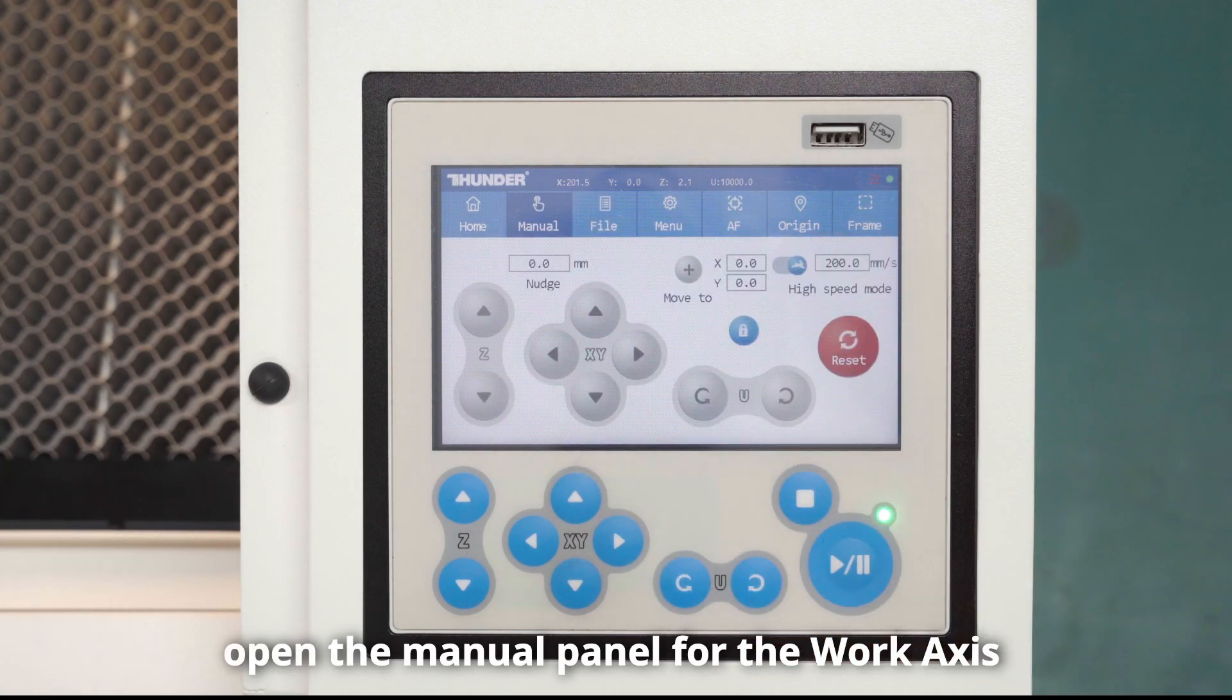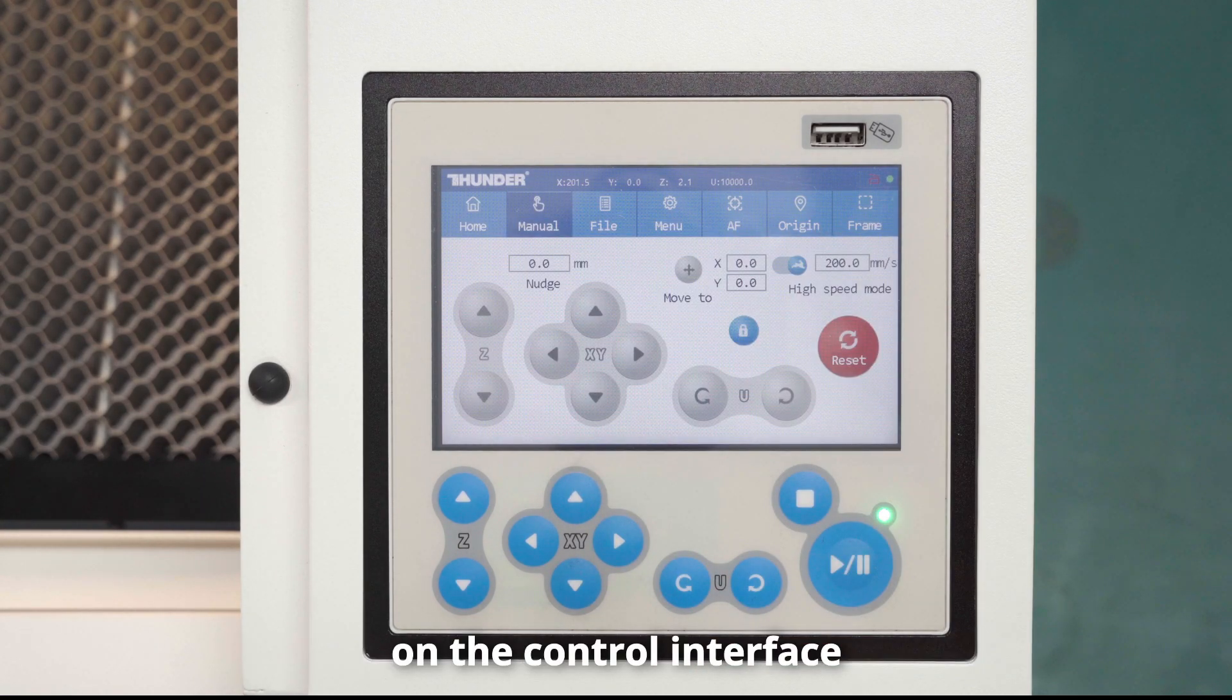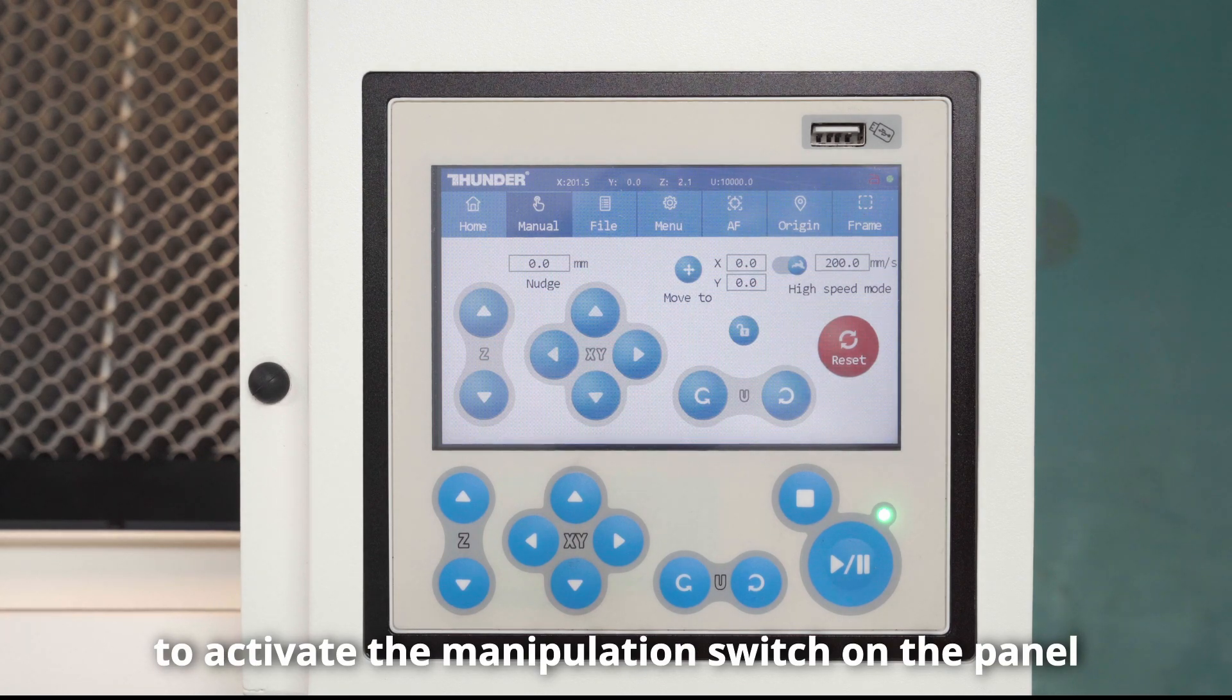Firstly, open the manual panel for the work axis on the control interface. Click Unlock to activate the manipulation switch on the panel.